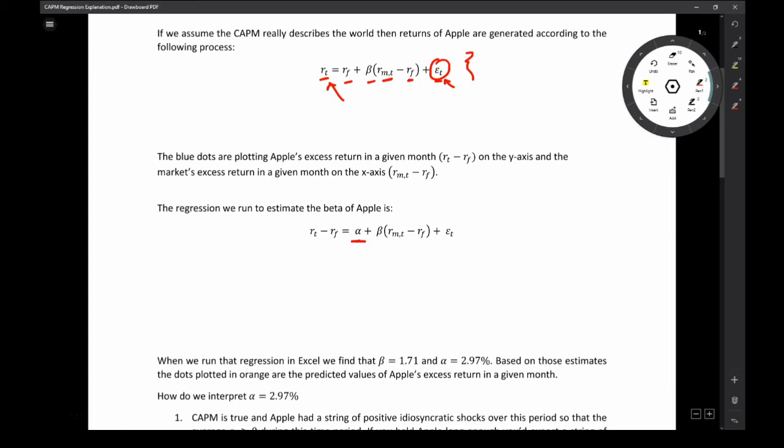This is not baked into the theoretical version of CAPM. This is going to be any excess return that we have over this time period. We'll dig into alpha here in a second. Anyhow, we're going to regress the excess return on Apple on a constant plus some coefficient, which is what we're estimating. We're estimating that beta times the market excess return plus our idiosyncratic shocks.